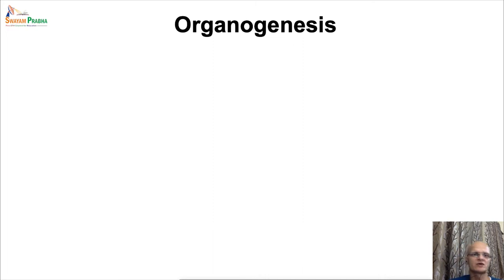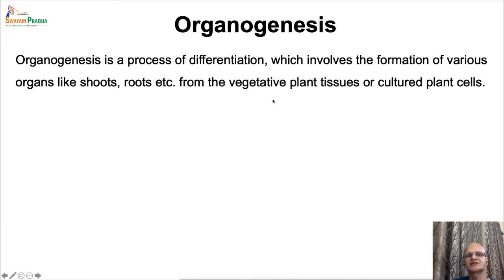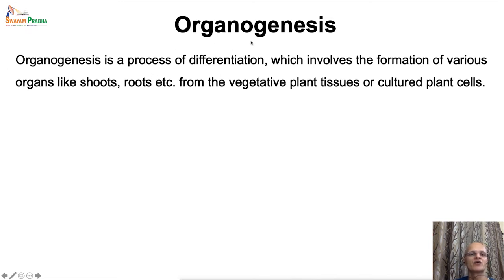Let's discuss organogenesis. The standard definition of organogenesis is: it is a process of differentiation which involves the formation of various organs like shoots and roots from vegetative plant tissues, from cultured plant cells, or from undifferentiated mass of cells — that is, the callus. This is essentially differentiation as discussed earlier; however, here it is restricted to the formation of organs only, and hence it is called organogenesis.